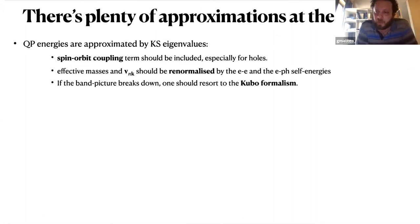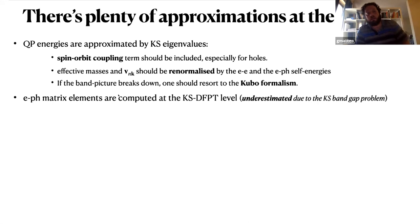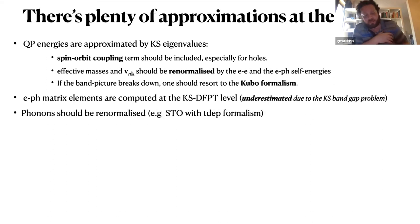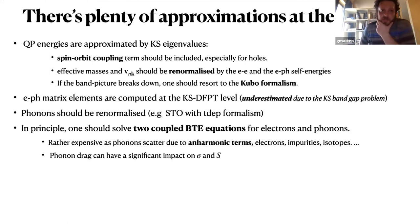But in my opinion, this is not unexpected in the sense that there are several approximations that are involved in the formalism. First of all, we are approximating the quasi-particle energy with Kohn-Sham. It's very well known that spin-orbit coupling should be included, especially for holes. But on the other hand, we should also include many-body effects due to electron-electron-phonon interaction. It's also well known that electron-phonon matrix elements computed at the Kohn-Sham level are underestimated due to the Kohn-Sham band gap problem. There are some systems in which phonons should be renormalized if we have instability at finite temperature. In principle, one should solve a system of two coupled Boltzmann equations for phonons and electrons.